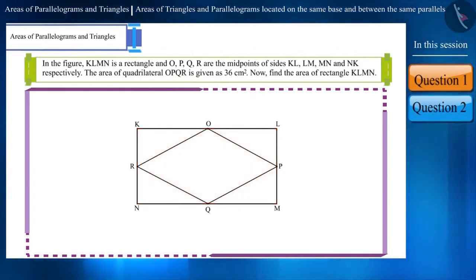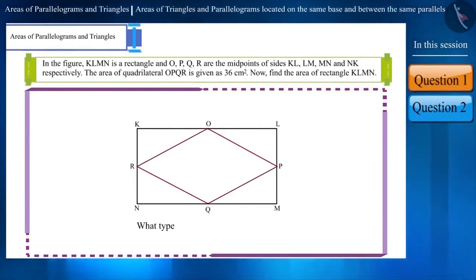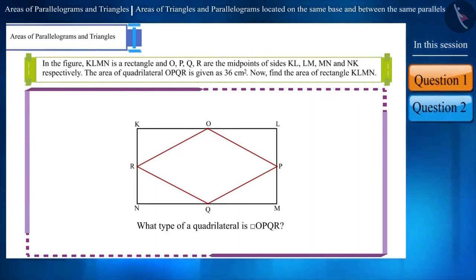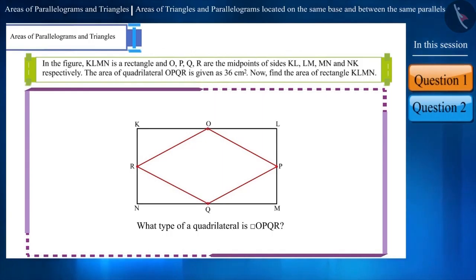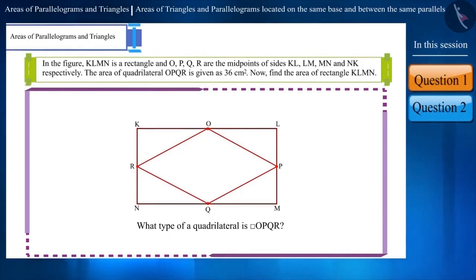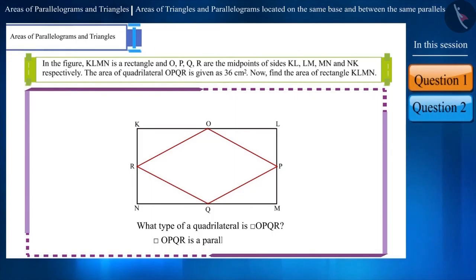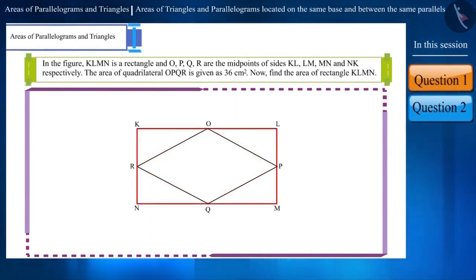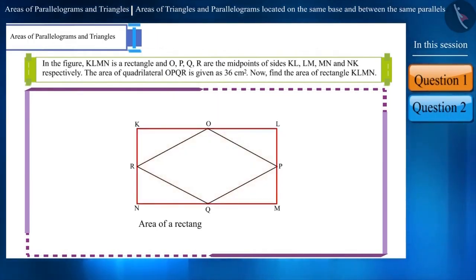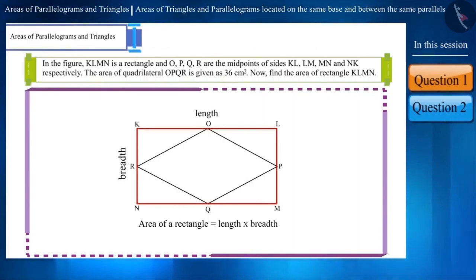Friends, before solving the question, can you tell what kind of quadrilateral is OPQR? We have studied that the quadrilateral formed by joining the midpoints of a rectangle is a parallelogram. Therefore, quadrilateral OPQR is a parallelogram and we have to find the area of rectangle KLMN. The area of a rectangle is equal to the product of its length and breadth.